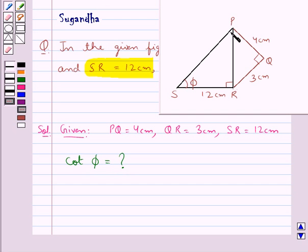As you can see, angle PRS is given as 90 degrees, so triangle PRS is a right angle triangle. Also, angle PQR is of measure 90 degrees, so triangle PQR is also a right angle triangle.